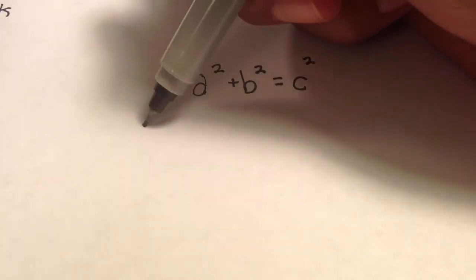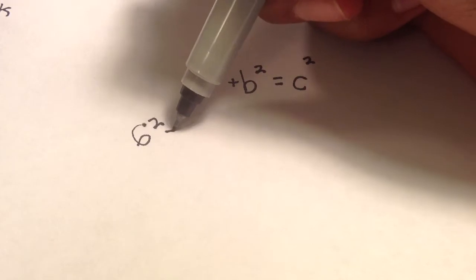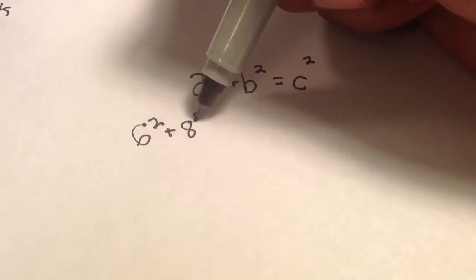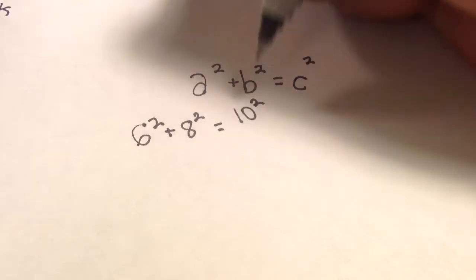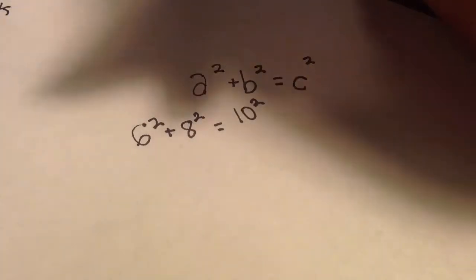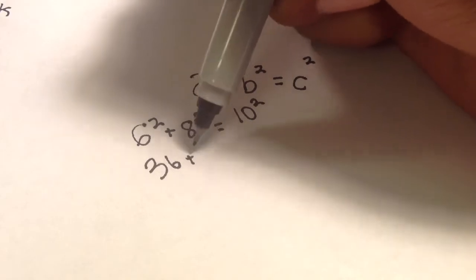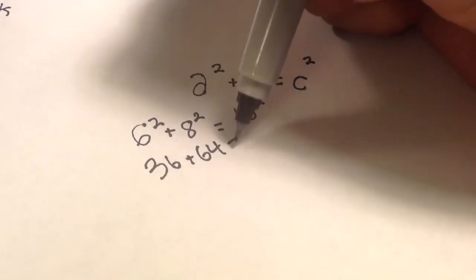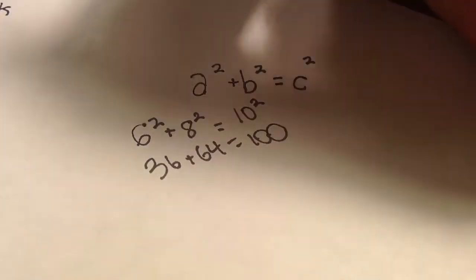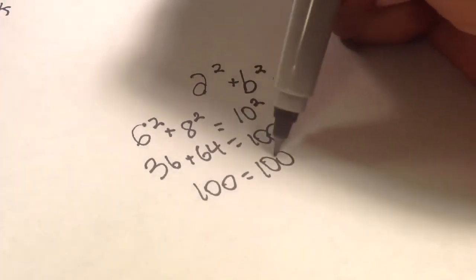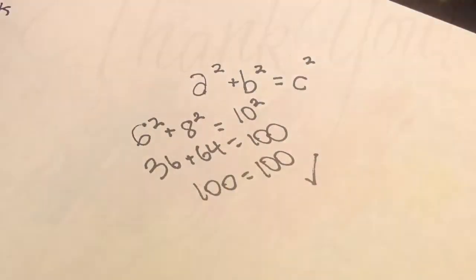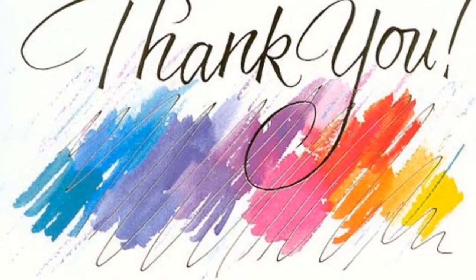Now we're going to plug in the numbers. A, as we're going to call, equals 6. So, 6 squared plus 8 squared equals 10 squared. 6 times 6 is 36, plus 8 times 8 is 64, equals 10 times 10, equals 100. 36 plus 64 is 100, and therefore, this is a right triangle. 100 equals 100.